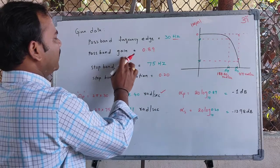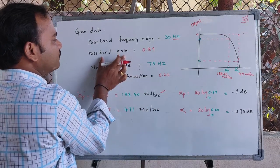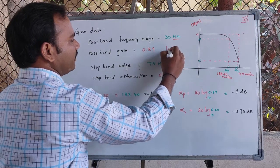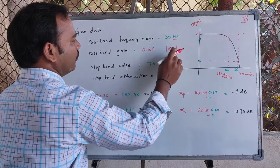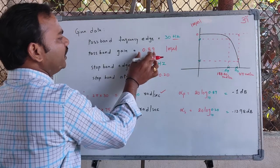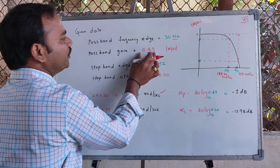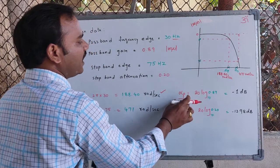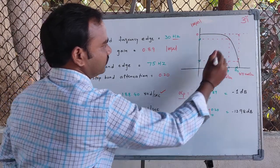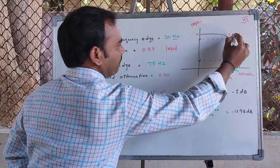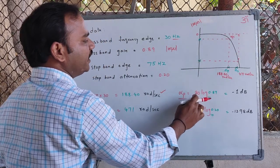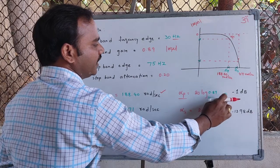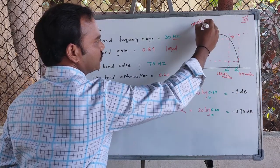In the given data, the passband gain is 0.89, that is the magnitude of H(jΩ). We need to convert this into decibels. The passband attenuation α_P = 20 × log₁₀(0.89), which gives minus 1 decibel.